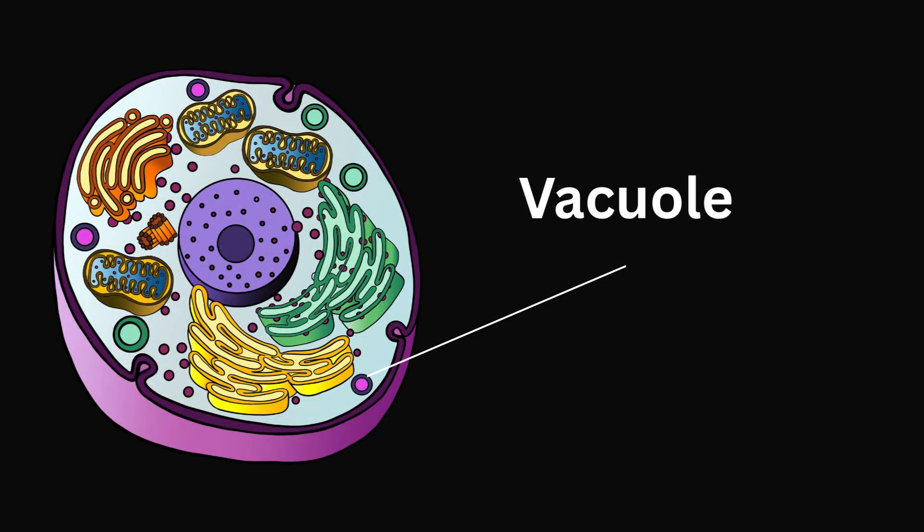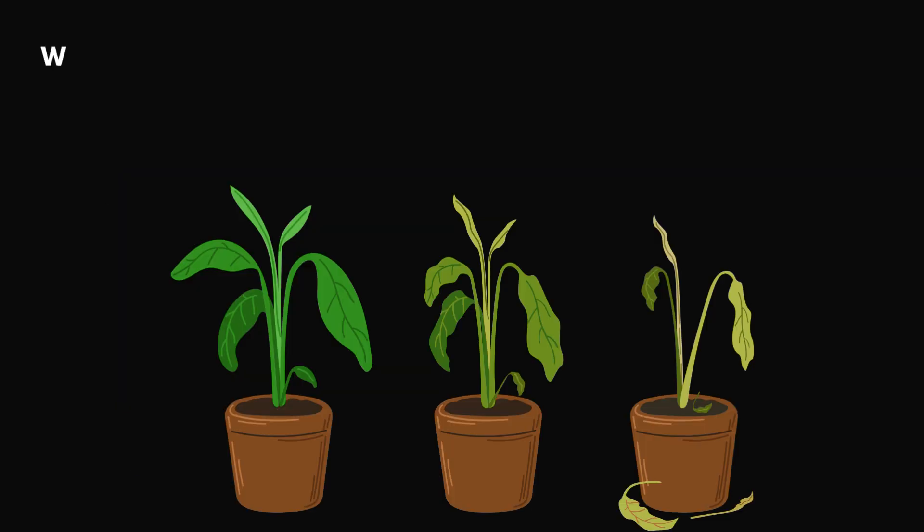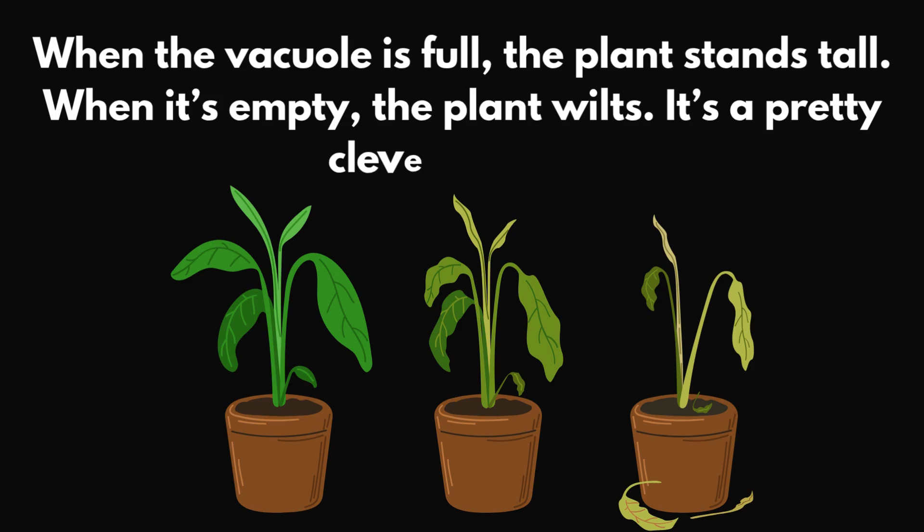Let's not forget about vacuoles. In animal cells, vacuoles are usually small and store things like water, salts, and food particles. But in plant cells, there's typically one large central vacuole that takes up most of the cell's space. It's like a huge water tank, storing nutrients and maintaining pressure to keep the plant upright and healthy. When the vacuole is full, the plant stands tall. When it's empty, the plant wilts. It's a pretty clever system.